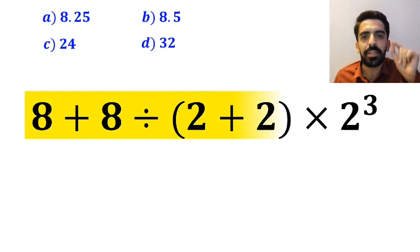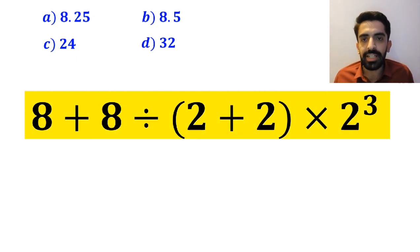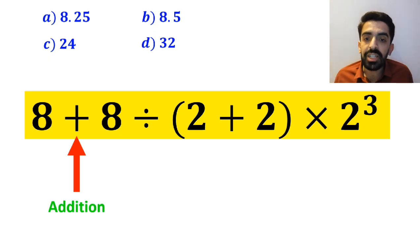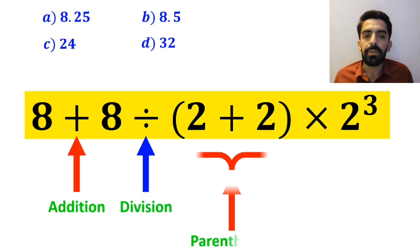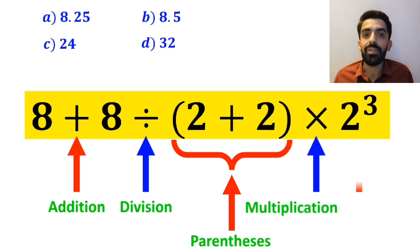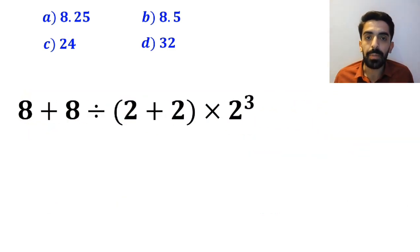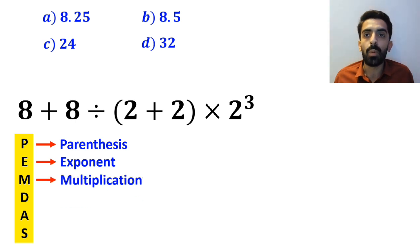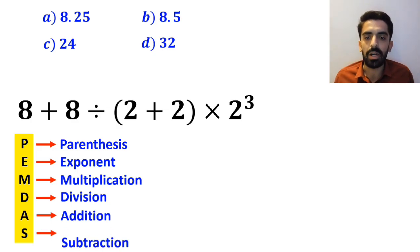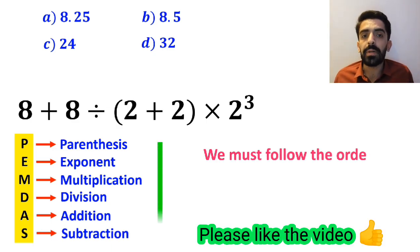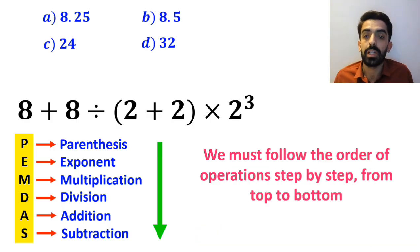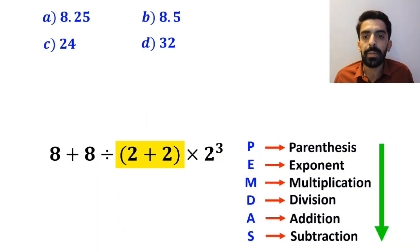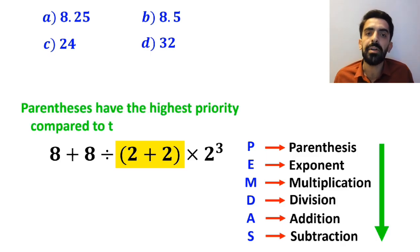Now, let me show you how to solve this expression properly. As you can see in the image, this expression contains an addition sign, then a division sign, followed by parenthesis, then a multiplication, and finally an exponent. To solve this problem, we must follow the PEMDAS rule: P stands for parenthesis, E stands for exponent, M stands for multiplication, D stands for division, A stands for addition, and S stands for subtraction. We must follow the order of operations step by step from top to bottom. We will start with the parenthesis first, because parenthesis have the highest priority compared to the other operations.